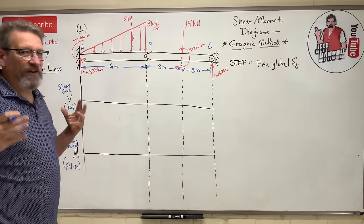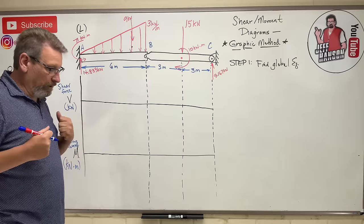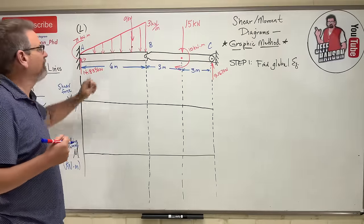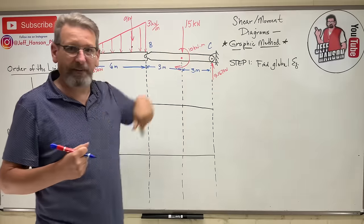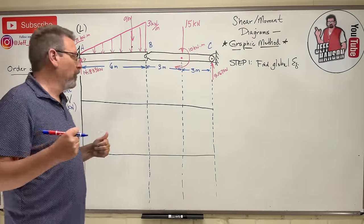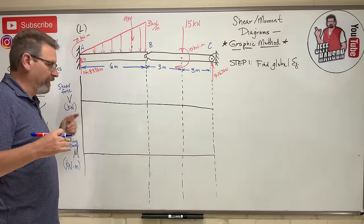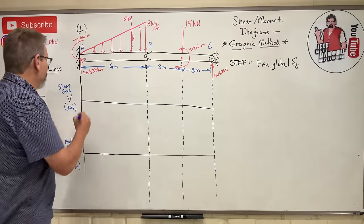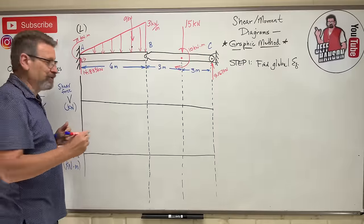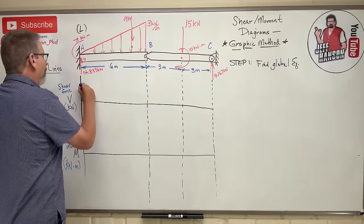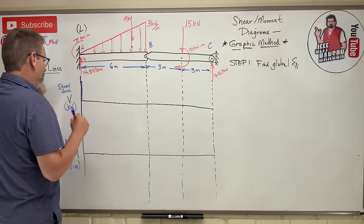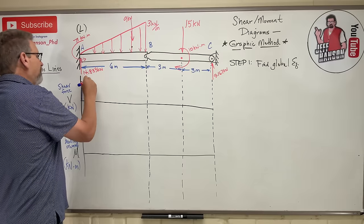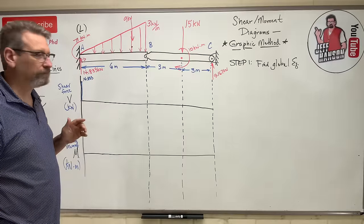As soon as we get on the beam at A, we get 14.833 kN upward — that's a Van Halen force, might as well jump! So I jump up to 14.833. Now look at the load above: as I walk along, I accumulate load from the triangular distributed load slowly at first, then faster.